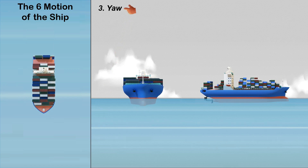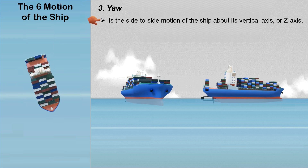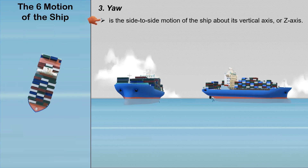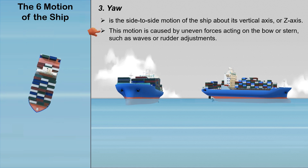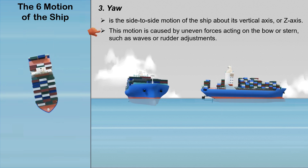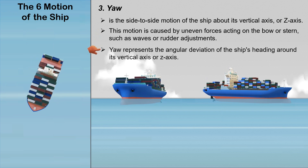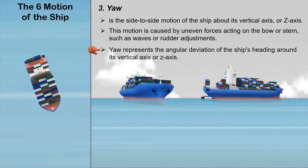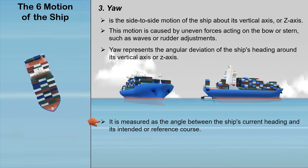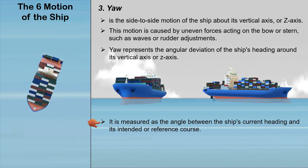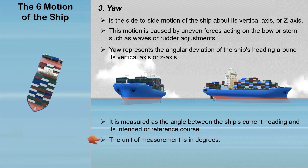Yaw is the side-to-side motion of the ship about its vertical axis or z-axis. This motion is caused by uneven forces acting on the bow or stern, such as waves or rudder adjustments. Yaw represents the angular deviation of the ship's heading around its vertical axis or z-axis. It is measured as the angle between the ship's current heading and its intended or reference course, so the unit of measurement is in degrees.